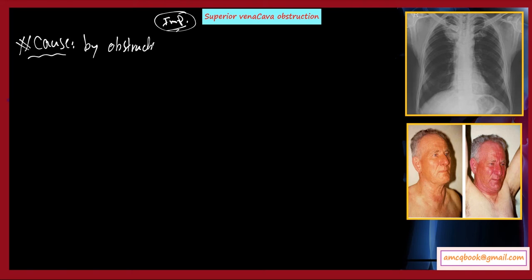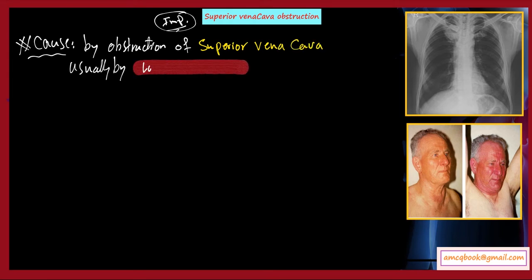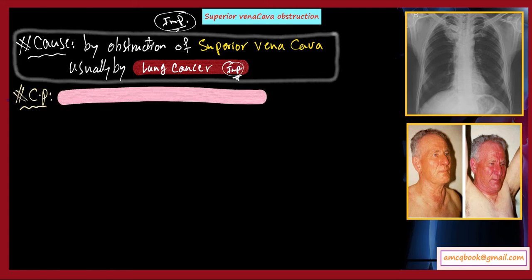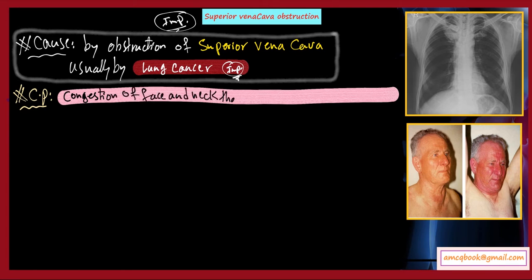Superior vena cava obstruction is very important for exams. The cause is obstruction of the superior vena cava, usually by lung cancer. The clinical picture includes congestion of the face and neck.